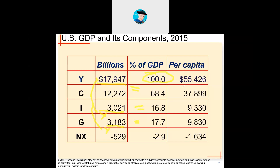Per capita simply means per number of individuals in the country — it could be per 100,000 or per million, whatever the base is. To find the per capita, you take the total per capita times that percentage you found earlier to get the per capita for each item.